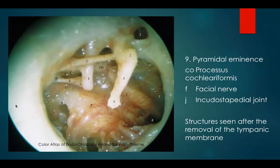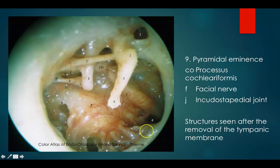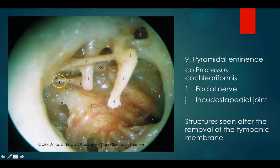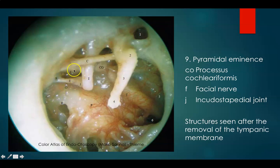If you remove the tympanic membrane, you can see the contents like this. This is the same right ear. Here you have your attic, lateral process, handle, umbo, tensor tympani, eustachian tube orifice, supratubal recess, processus cochleariformis, chorda tympani, long process of incus, incudostapedial joint, stapedial tendon going and attaching to the head of stapes, pyramidal process which is in the posterior wall of middle ear, round window. Just above the oval window is your facial nerve.